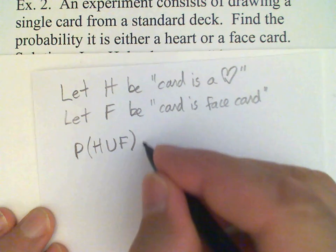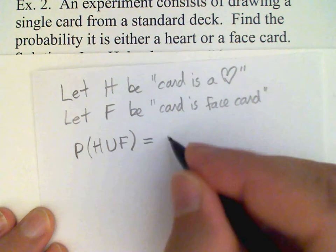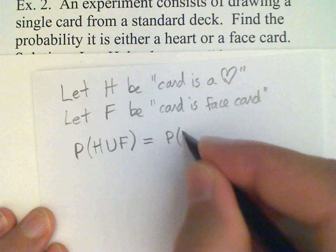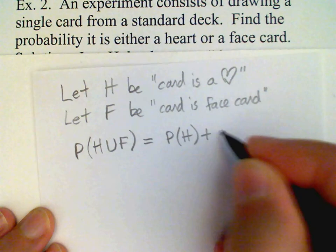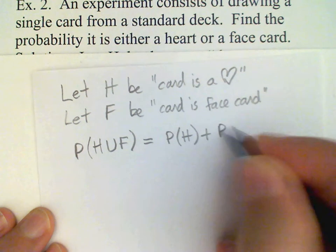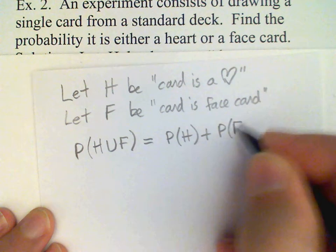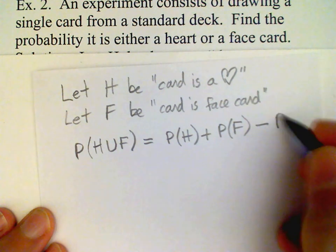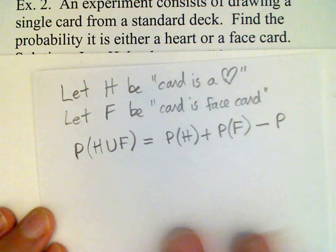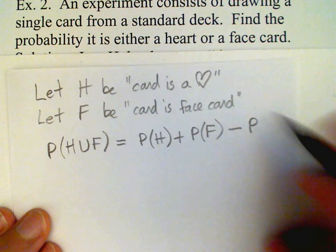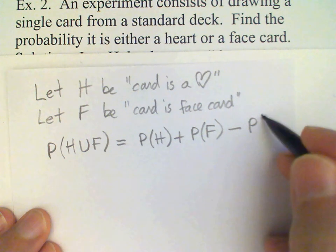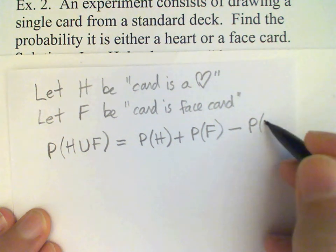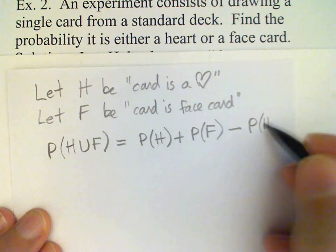From our general formula, we have the probability of H plus the probability of F minus the probability of their intersection, H intersect F.